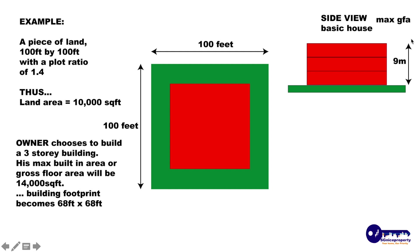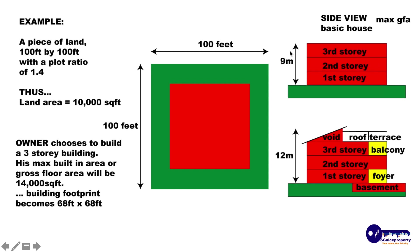If I were to have a side view of it, this shows you that based on his maximum gross floor area of 14,000 square feet, he could build a building up to 9 meters if it is 3 meters in height per storey — first storey, second storey, third storey. However, if he chooses to use up areas which are allowed to be included in his strata area but are not part of the gross floor area, he can do so by building a foyer or a balcony, and he can replace these areas by building a basement below.